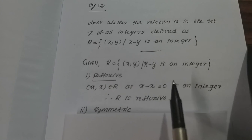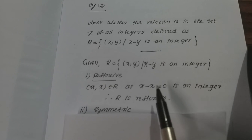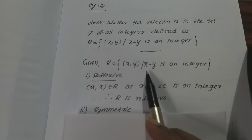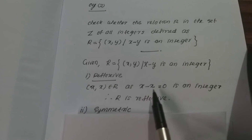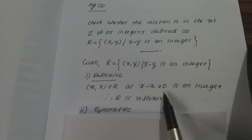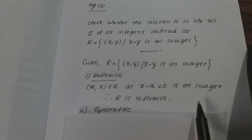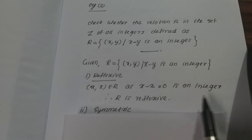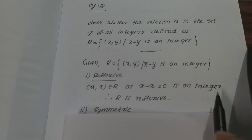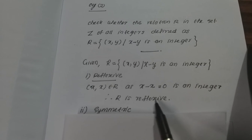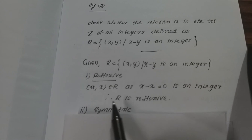Now let's check reflexive. We consider x minus x, which equals 0. For example, 1 minus 1 = 0, 2 minus 2 = 0. Since 0 is an integer, (x, x) belongs to R for all x. Therefore R is reflexive.